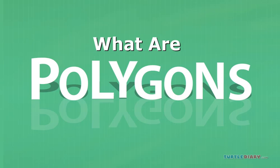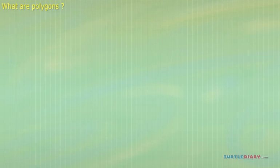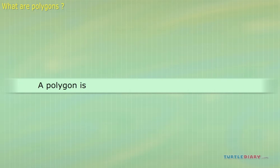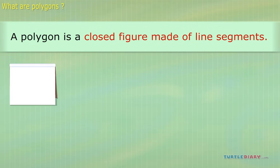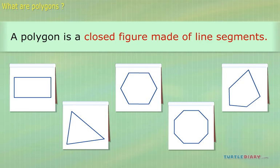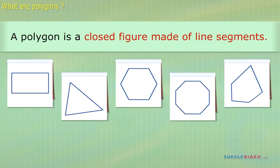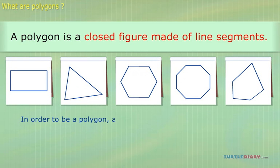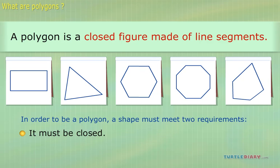What are polygons? A polygon is a closed figure made of line segments. Here are some examples of polygons. As you can see, not all polygons are regularly shaped. Some of them look quite odd. In order to be a polygon, a shape must meet two requirements: 1. It must be closed. 2. It must be made of line segments.